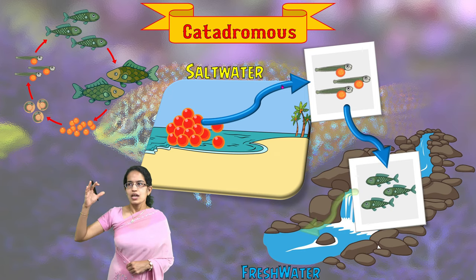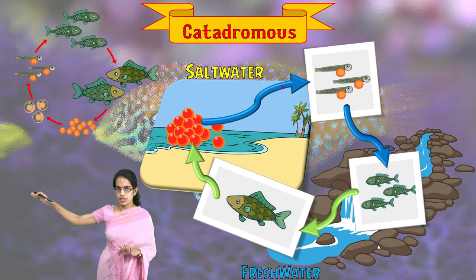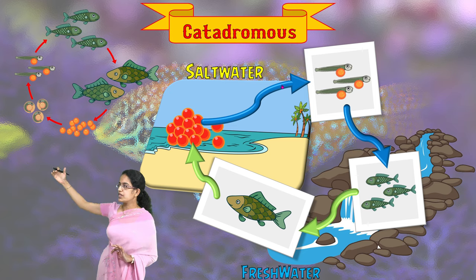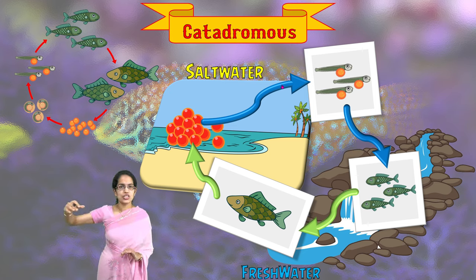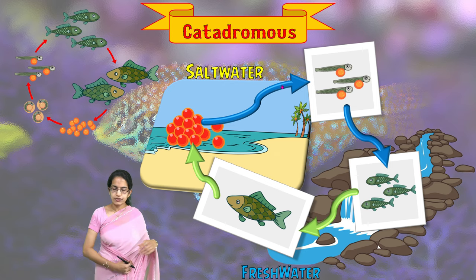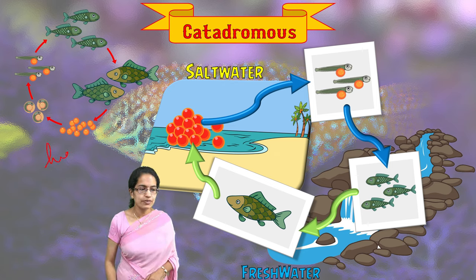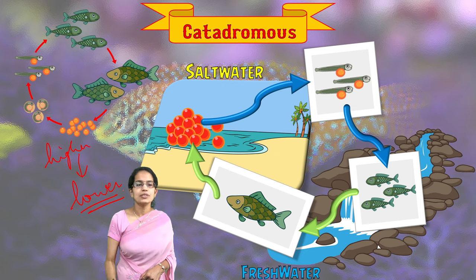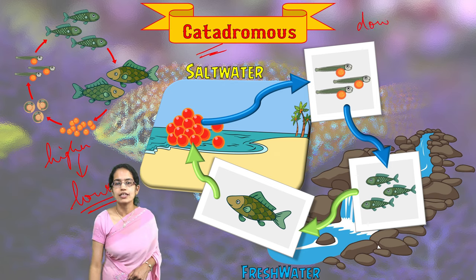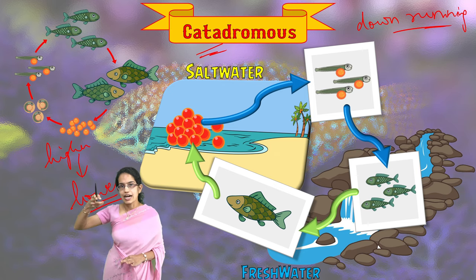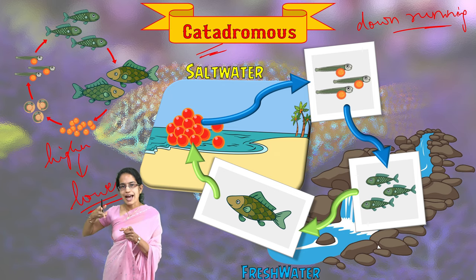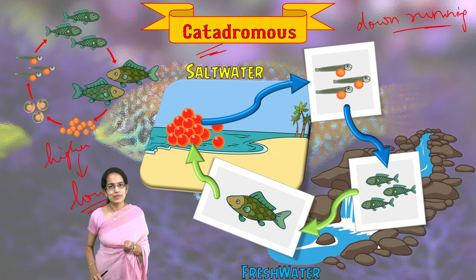To understand this: seawater and freshwater exist at different elevations. Rivers, which are a source of freshwater, originate from a higher elevation and merge with the ocean at a lower elevation. So the fishes are moving from higher elevation going towards lower elevation, and therefore catadromous fishes are called down-running fishes. A good way to remember this is 'cata' — think of 'cut'. If I cut a sheet of paper, the other side goes down. The same happens with catadromous fishes.